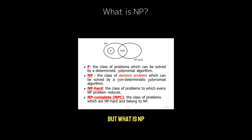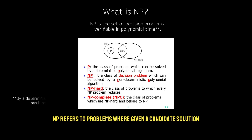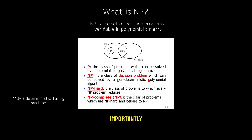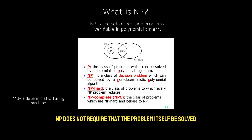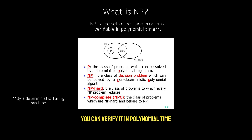But what is NP? The class NP stands for non-deterministic polynomial time. NP refers to problems where, given a candidate solution, you can verify its correctness quickly in polynomial time. Importantly, NP does not require that the problem itself be solved quickly — just that once you have a solution, checking if it's correct is very fast. So a problem is in NP if, given a solution, you can verify it in polynomial time.